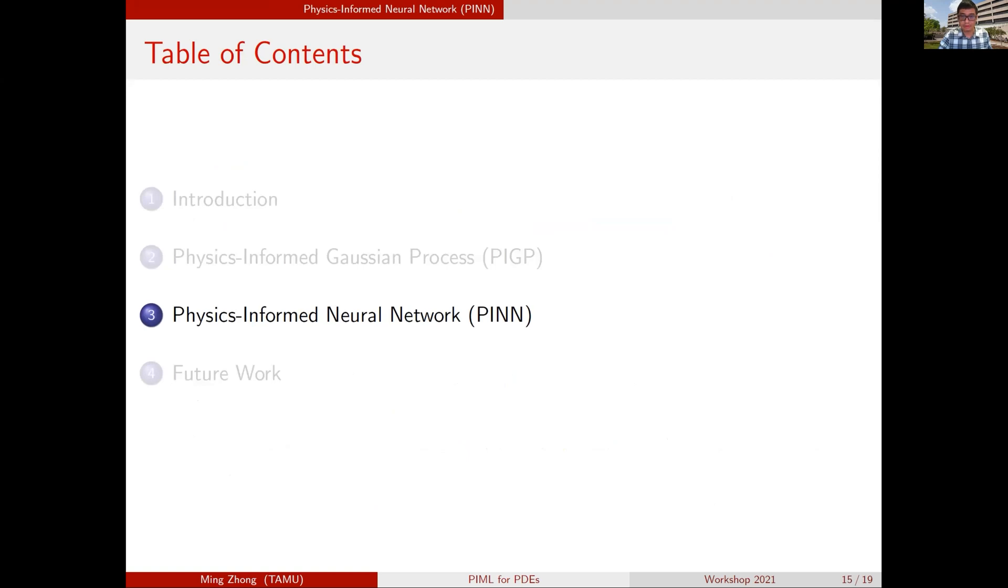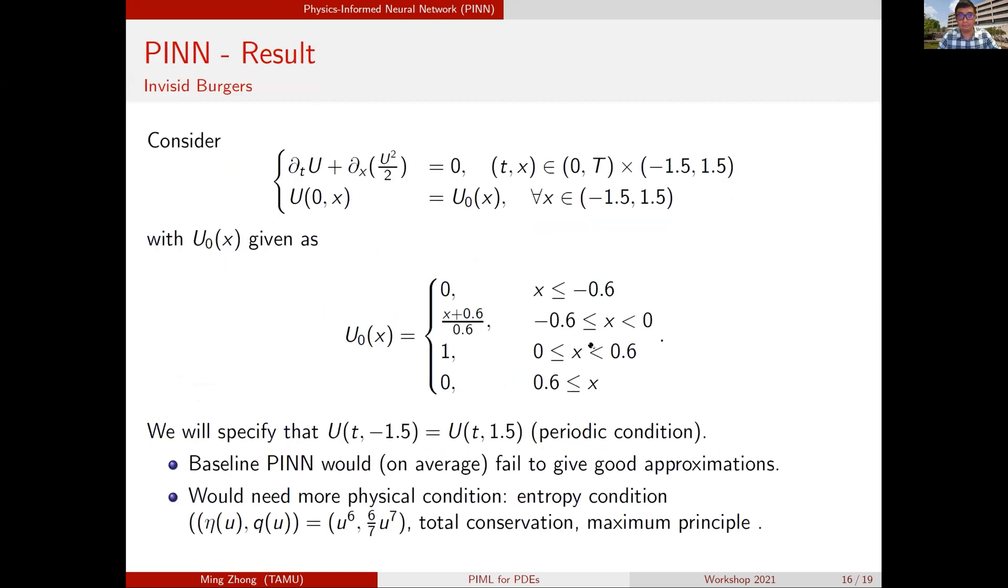That's the conclusion on Gaussian process. We can move on to the neural network. We've already been introduced to PINN. Let's look at PINN to solve a hyperbolic conservation law. We're not talking about parabolic, we're talking about hyperbolic. We are solving the inviscid Burgers equation without the viscosity. We only need the initial conditions with this initial condition that will provide a rarefaction and a shock to the right. The rarefaction will eventually catch up to the shock if you don't stop early. In order to solve this equation, we specify a periodic boundary condition on the limited computational domain.